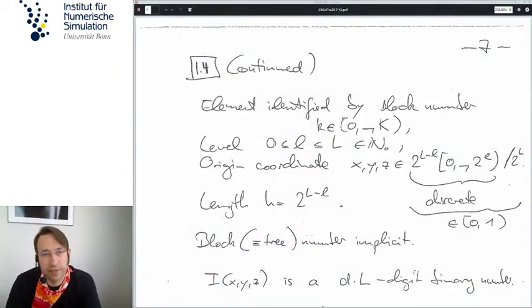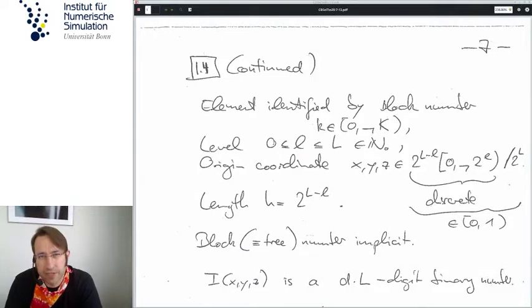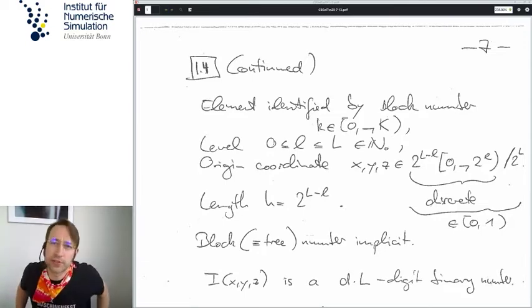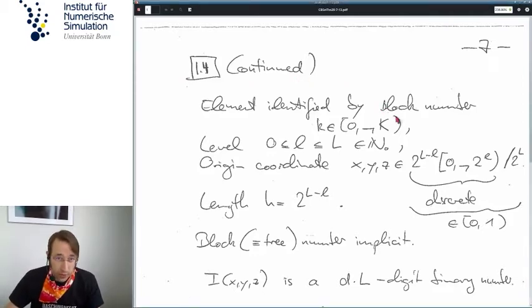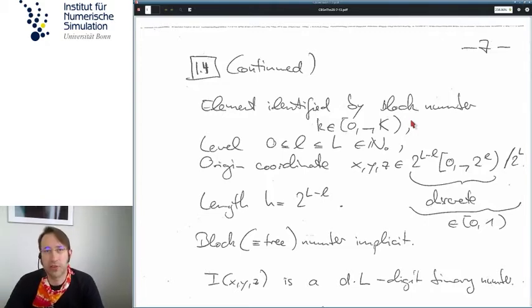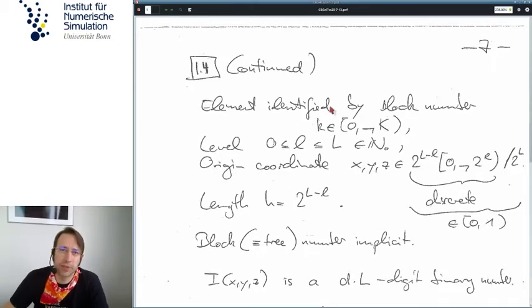So where were we? We were at 1.4 having just introduced arc trees and how we can encode the levelwise lexicographic structure as a code that somehow aggregates the coordinates into a binary description. If you look at this formula here, we see that we of course have multiple trees in general, so I'd call them blocks. The domain is split into blocks. Each one we understand as a tree, refined tree, but we only go to a certain given maximum level big L in practice.